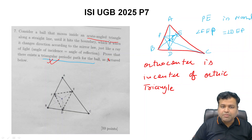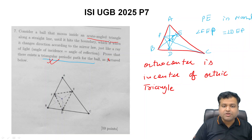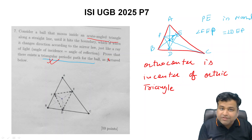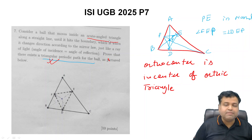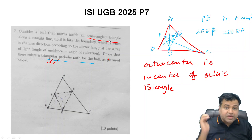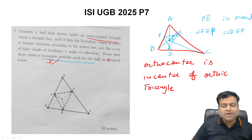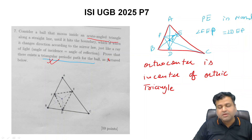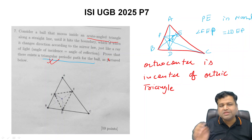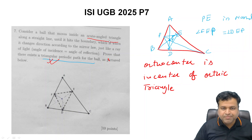That was Problem 7. If you are aware of the fact that the orthocenter is the incenter of the orthic triangle, the question is very easy. But if you don't know this concept, it may be tough to figure out during exam time. This is a very common concept for those who have prepared for Math Olympiads, so I hope you are now able to understand this problem.